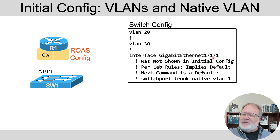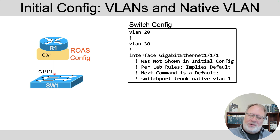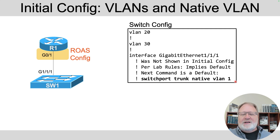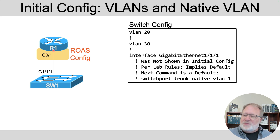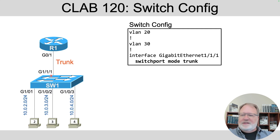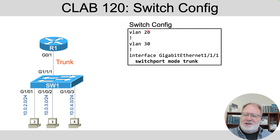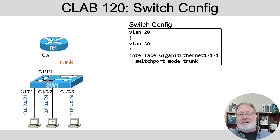Under interface GigabitEthernet 1/1/1 on the switch, there was no explicit configuration, but there are meaningful defaults. The switch defaults to native VLAN 1 because of the default command switchport trunk native VLAN 1 — that's why for the router R1 config we had to use the native keyword: VLAN 1 defaults to be the native VLAN on the switch side. What you do need to configure on the switch is to make the switchport trunk, since it doesn't trunk by default. Simply add switchport mode trunk under the interface, and that completes the switch config.